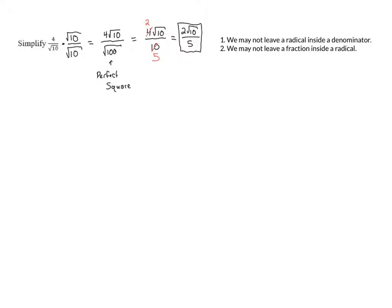This is going to be the process that we're going to use for most of these problems. I want to point one thing out that happened to be true in this problem but isn't always going to be true. You may have noticed that the thing we multiplied the top and bottom by was the denominator we started with. We know that if we have the square root of a number and we multiply it by itself, that's going to give us a perfect square. This will always work in problems like these, but there are certain situations where we don't just want to multiply by the denominator we have, because there might be a smaller number we can multiply by.